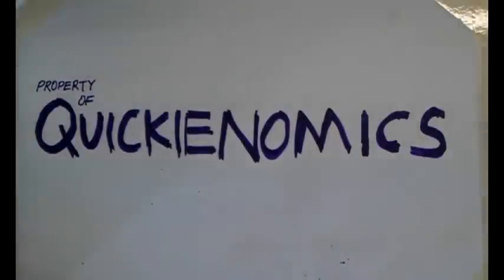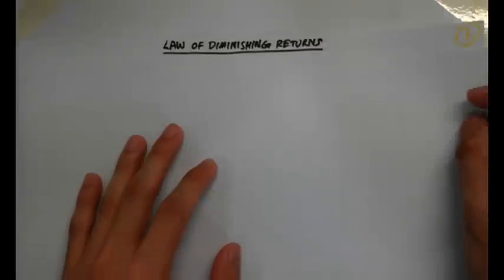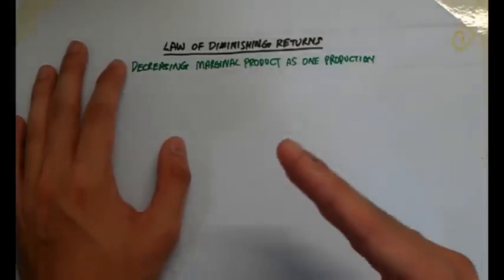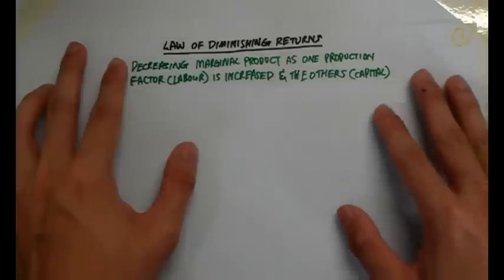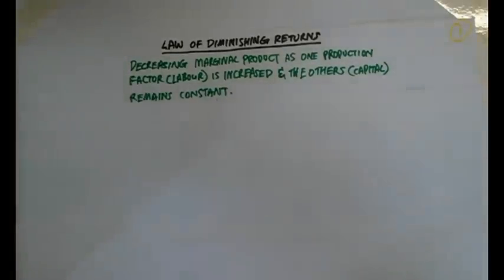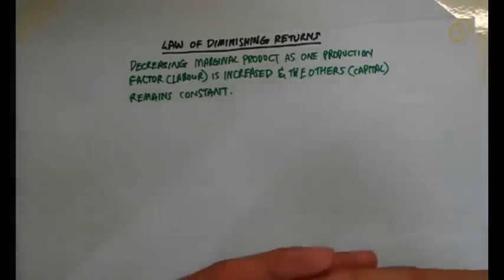First, let's talk about this concept known as the law of diminishing returns. The law of diminishing returns is basically the decreasing marginal product as one production factor is increased and the others remain constant. So if I keep my capital constant, that's the short run, and I just keep increasing my labor. Will the scale of my production follow suit on the same scale as my labor increasing?